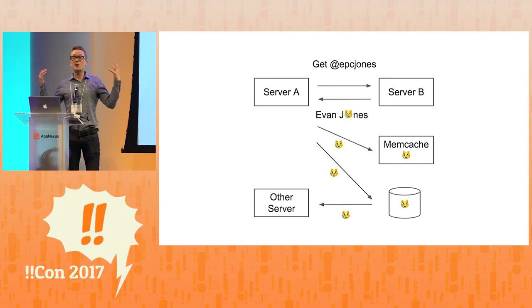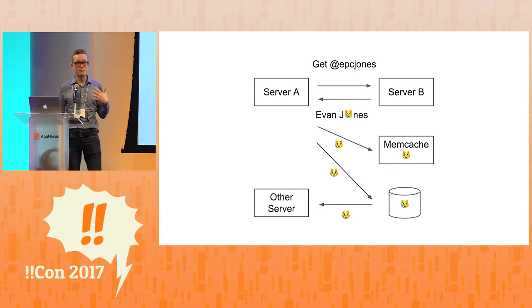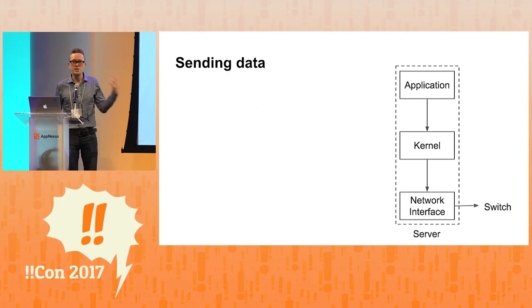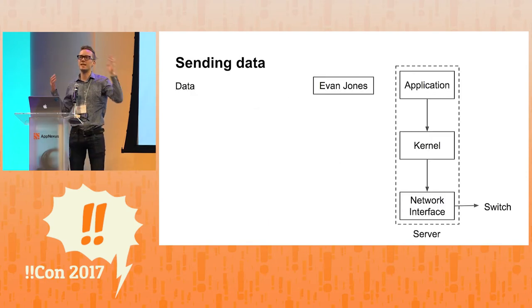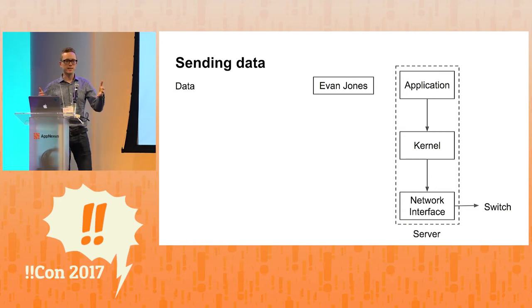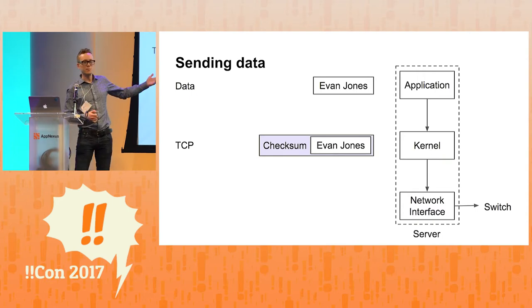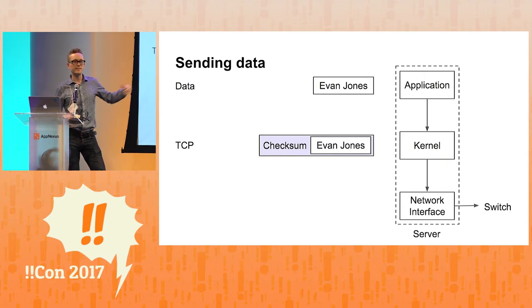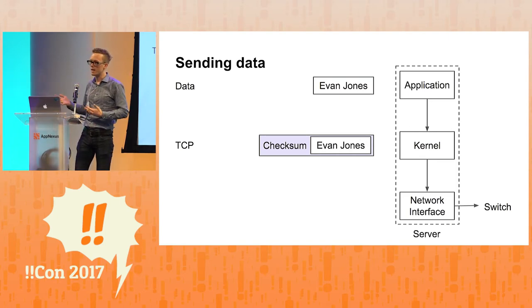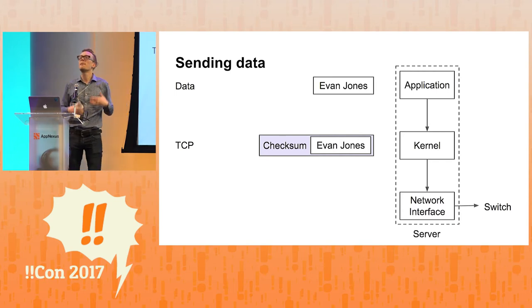We've cleaned up the mess — so now let's talk about how the heck this actually happens, because it's not supposed to. Let's first talk about what is supposed to happen. Our application at the top wants to send some data, like my name, Evan Jones. It sticks it in a packet and calls the write system call, handing it to the operating system. The OS uses TCP, in most cases, to send that message. TCP has a checksum computed from your data, because the designers of TCP back in the 70s realized that networks frequently corrupt data, so it would be nice to verify if data was received correctly.